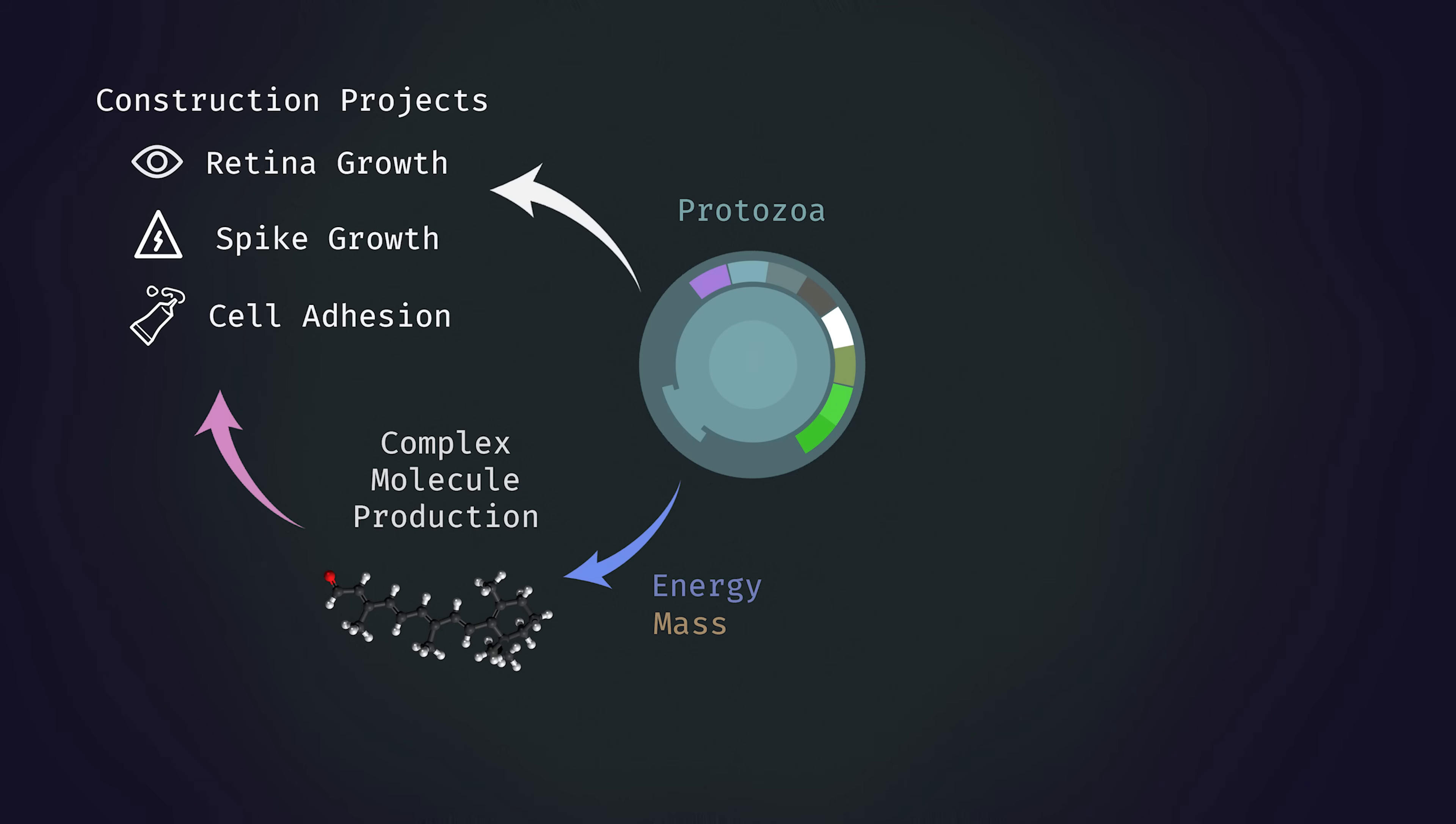A key part of this process is that when a protozoan dies, its supply of complex molecules can be scavenged by another protozoa, allowing for them to bypass the need to make it themselves. This opens up a possible avenue for predation to take hold in an ecosystem.